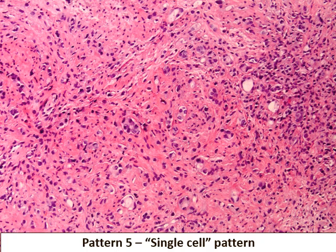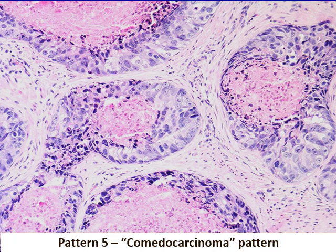I would recommend a higher threshold in this situation — you should not grade pattern five based on few single cells or few cords of cells. Here is an example of comedocarcinoma pattern, characterized by intraluminal dirty necrosis with karyorrhectic debris. Recent studies have shown that the comedocarcinoma pattern is actually more common with intraductal carcinoma than Gleason pattern five. Utilize basal cell markers judiciously if you think it is going to change your grade group in a significant manner.